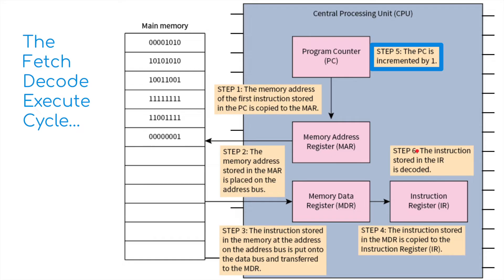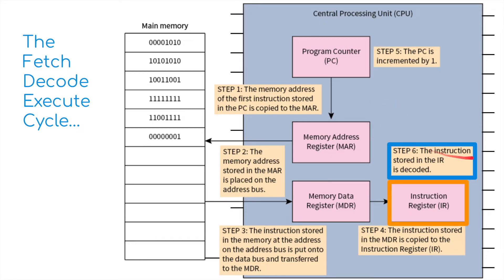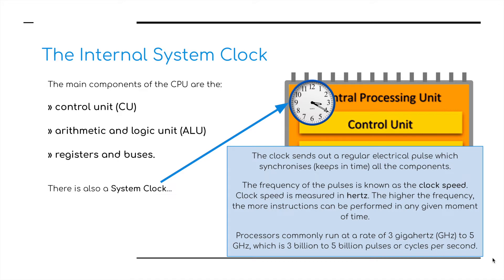The PC is incremented by one. And finally, step six: the instruction stored in the instruction register is decoded. We mentioned this in the last video, but I do want to talk a little bit more about the internal system clock, because it is part of the CPU.